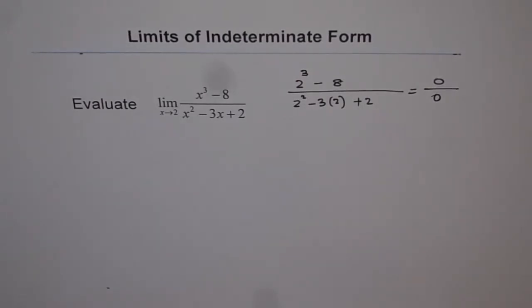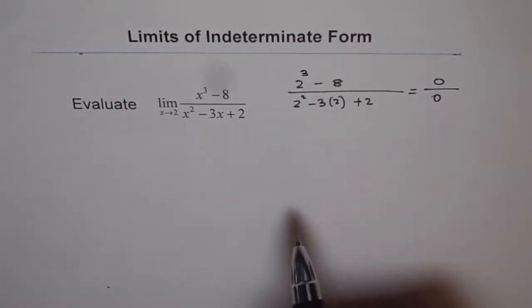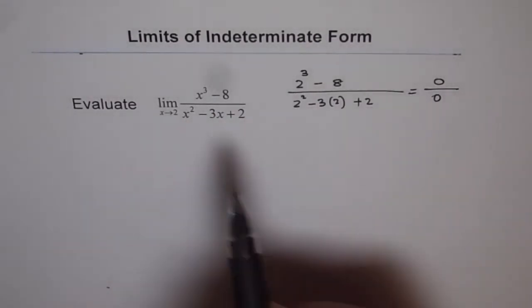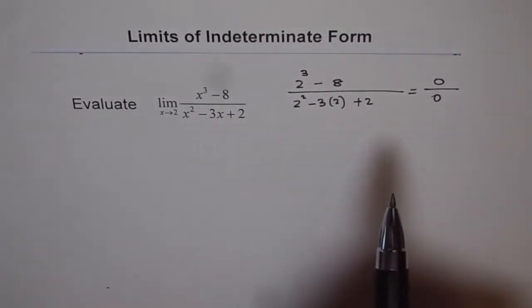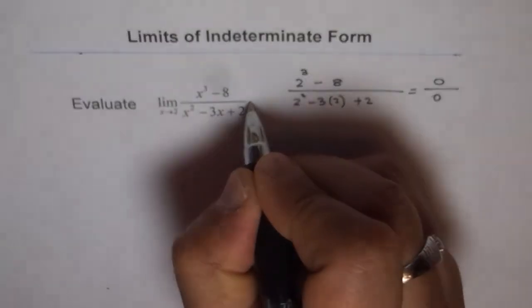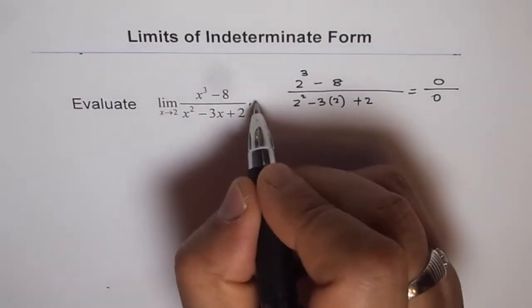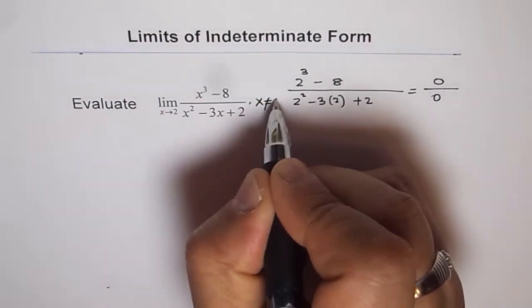So it is indeterminate form. Why? Because when we are trying to substitute the limiting value, we get 0 over 0, which gives us a form we call indeterminate form. 0 over 0 is mathematically meaningless. It is not defined in mathematics. So we know that the value of the function does not exist as x approaches 2, so x is not equal to 2.